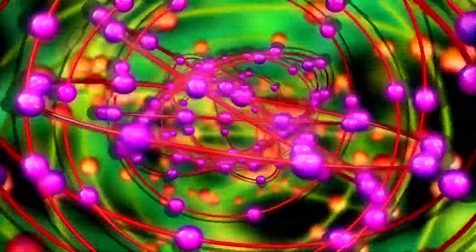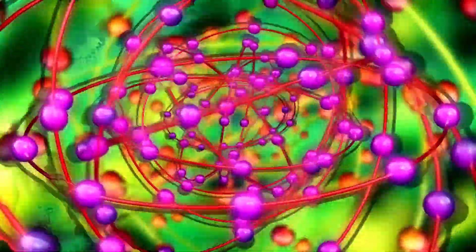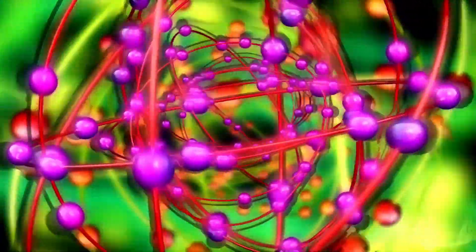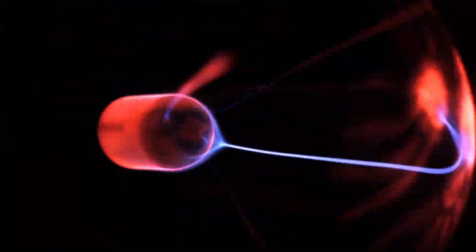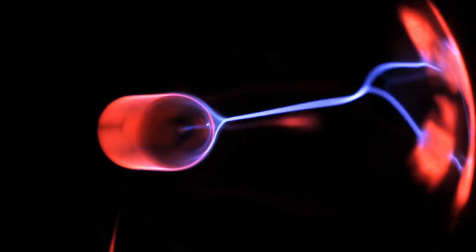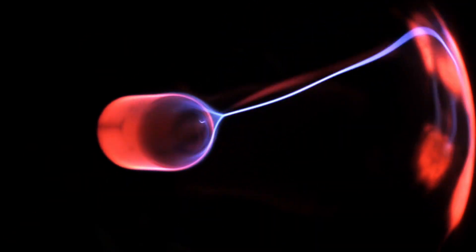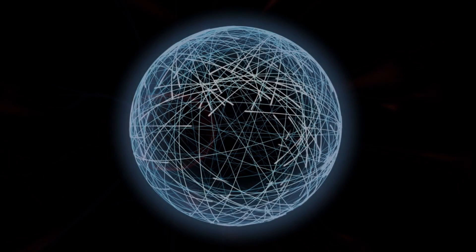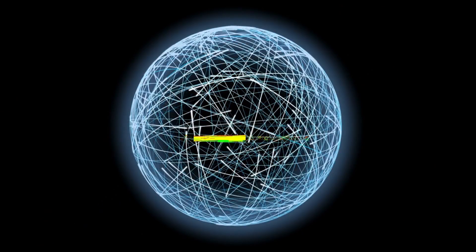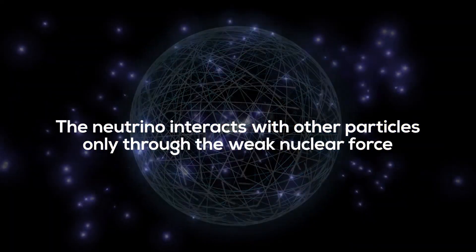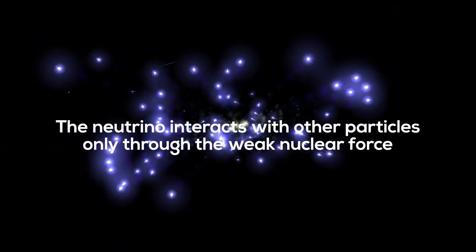Electrons, for instance, are easily detectable because they are electrically charged, so they feel the electromagnetic force. However, a neutrino has no electric charge, so it does not feel the electromagnetic force. To make things even more complicated, the neutrino does not feel the strong force either. So it interacts with other particles only through the weak nuclear force, which is the weakest of these three forces.